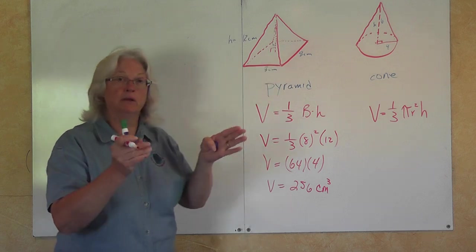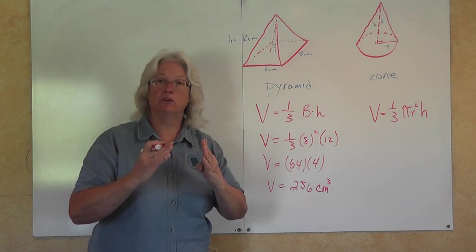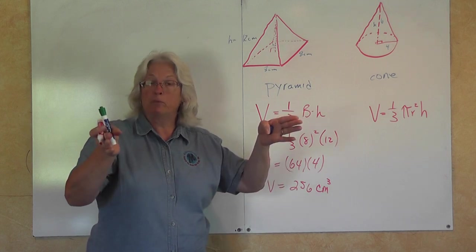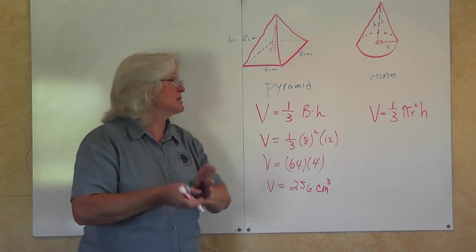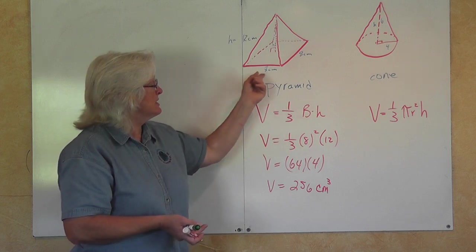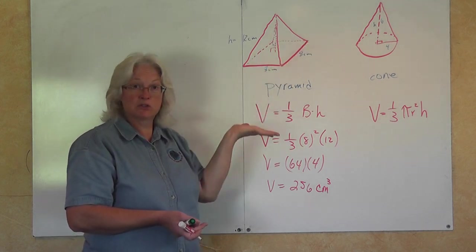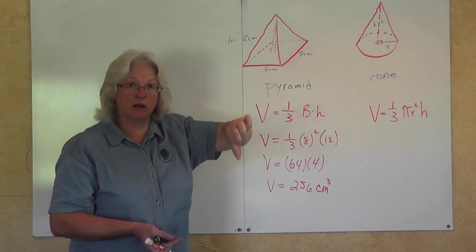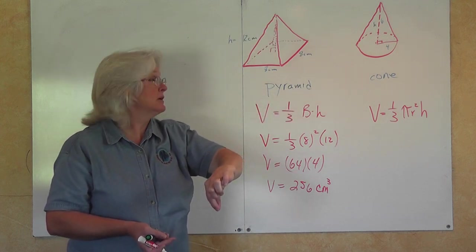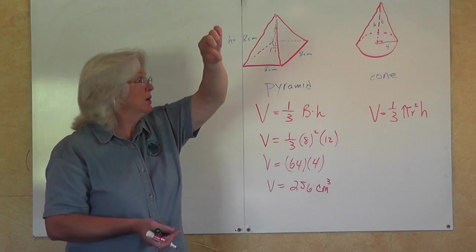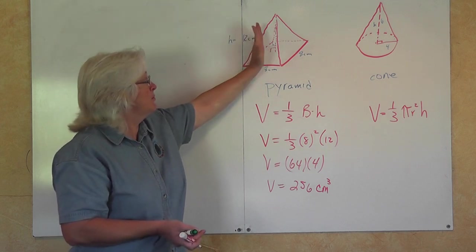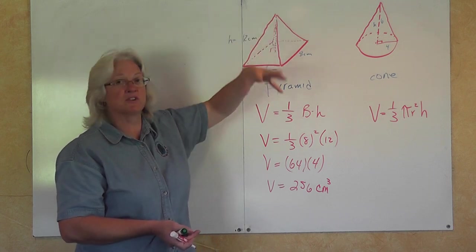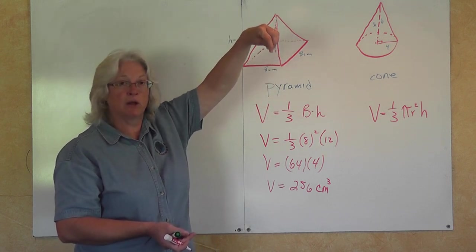A pyramid is related to a prism. A prism, for example, would be a rectangular box. A pyramid has any shape at the bottom here—it's a square shape. The way it's formed, it's like you put your fingers down and right in the center of that square shape, pull it up to a point at the top. So you have four surfaces that are triangular, coming up and meeting a point.